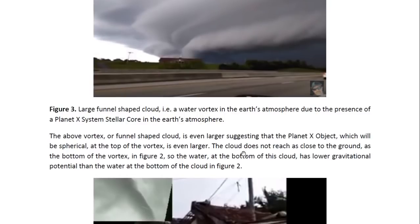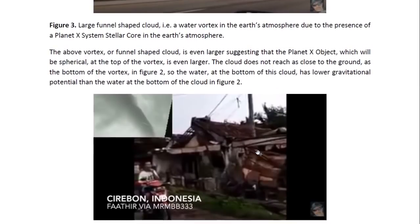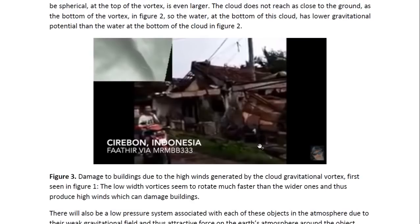The above vortex or funnel-shaped cloud is even larger, suggesting that the Planet X object, which will be spherical, at the top of the vortex is even larger. The cloud does not reach as close to the ground as the bottom of the vortex in figure two. The one in figure two must have water at the bottom of the cloud with a higher gravitational potential than the water at the bottom of this one. The one in figure one had such a small width and created a lot of damage — it gave rise to high winds — because the vortex is very tight and rotates very fast.